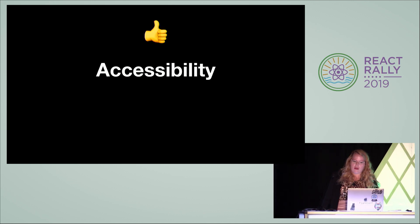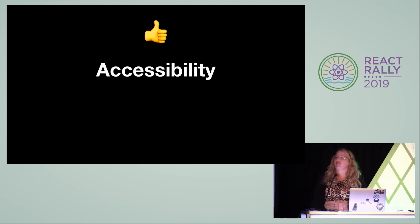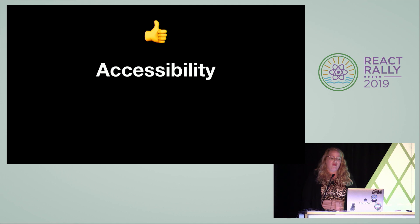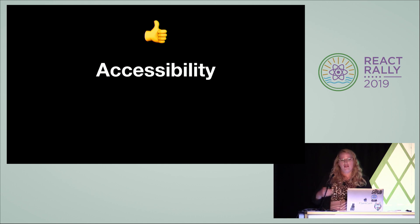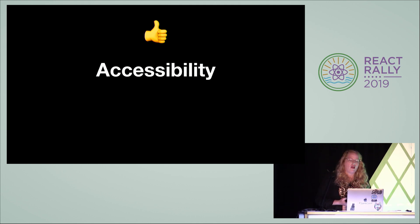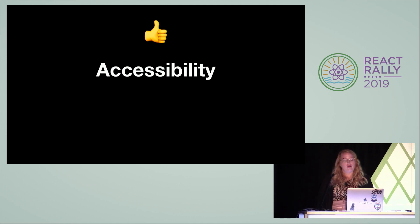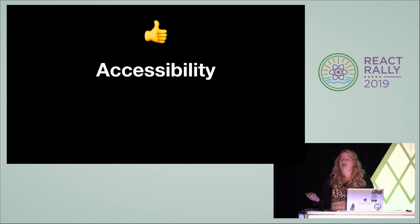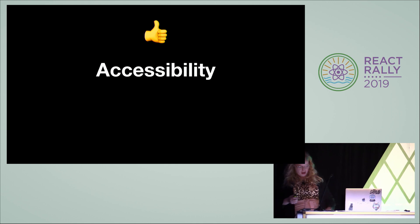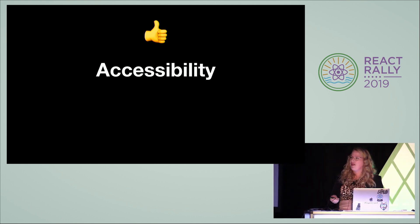Another huge bonus is accessibility. This is something I really care about — most of my previous conference talks have been about accessibility. Just like design systems is the overlap between engineering and design, I really think accessibility is equal parts engineering and design. Color contrast is usually something a designer lays out, and markup is super important for accessibility — if an engineer uses non-semantic markup, that can make something really inaccessible. Hopefully your design system can make these decisions for your engineers and designers in one place, so not every engineer has to become an expert on accessibility.